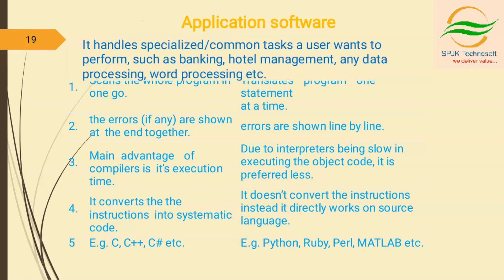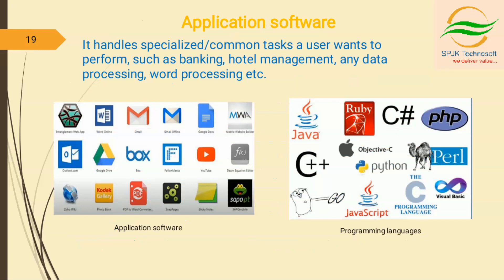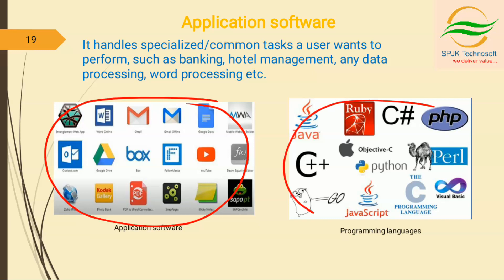Coming to application software. Application software are the set of programs developed by programmers in order to perform specific types of jobs. These application softwares are created by programmers using programming languages — for example, doing calculations, beautifications, documents, etc. These are created for a specific purpose.